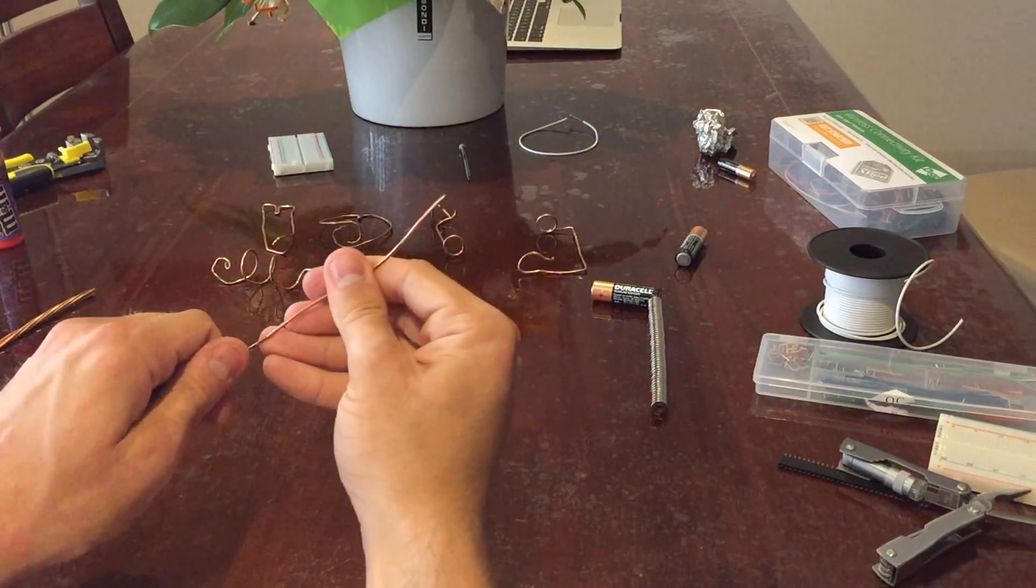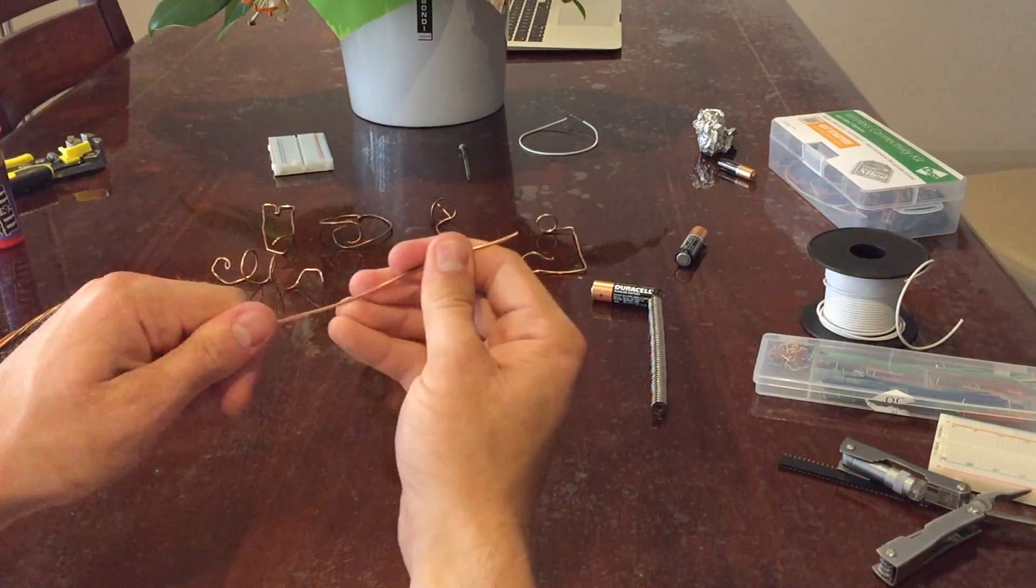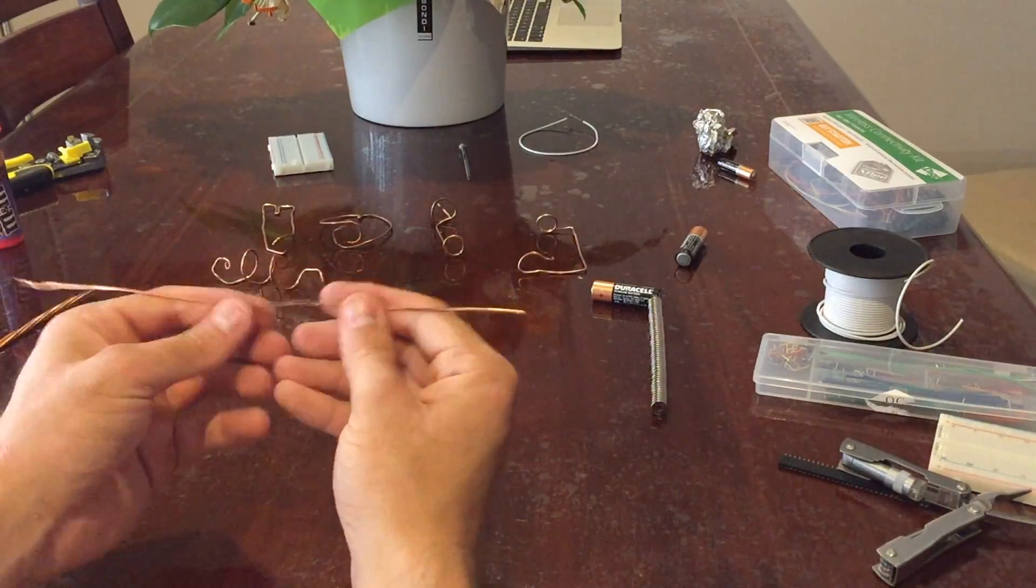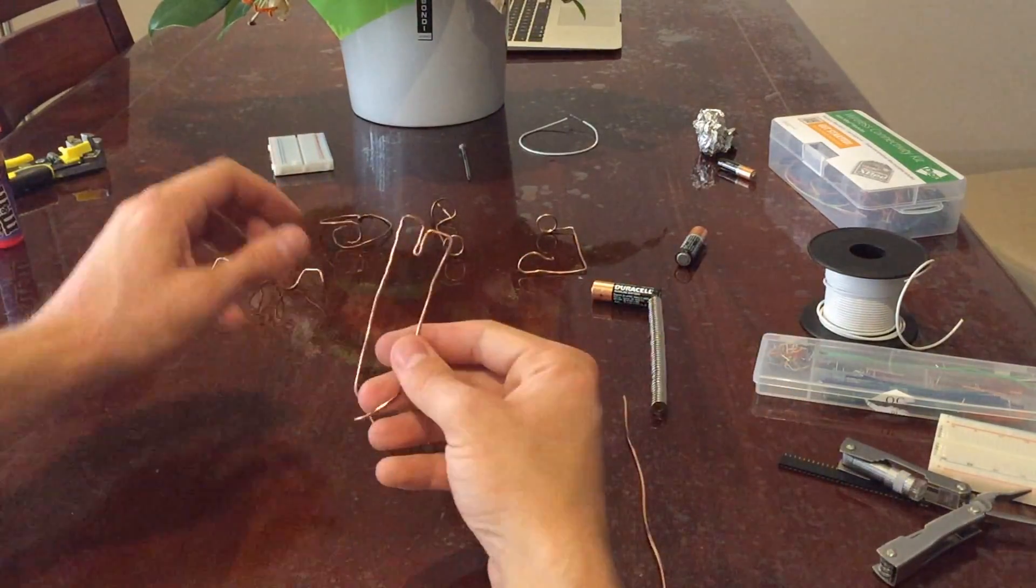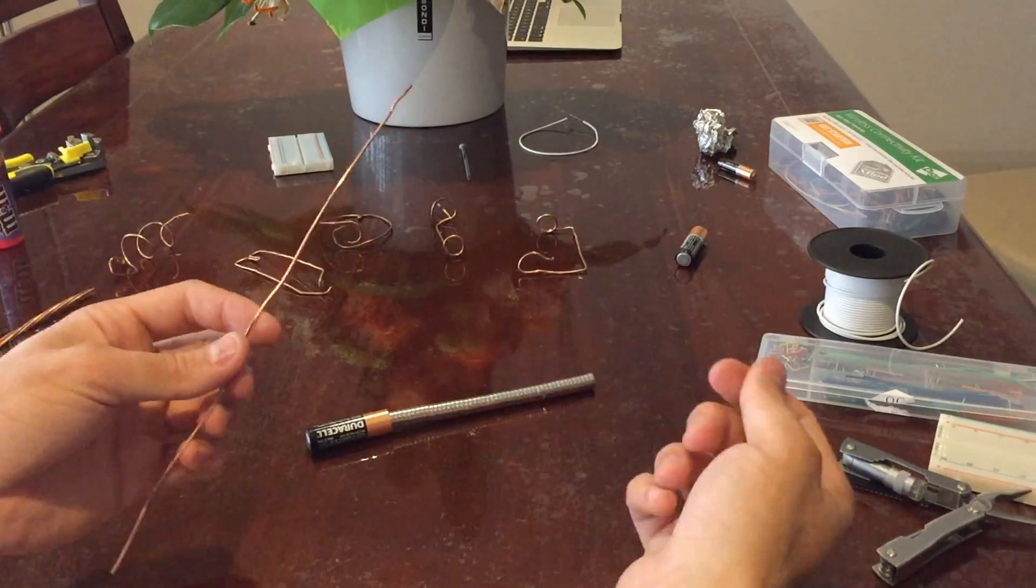I've also got a blog post on how to make a homopolar motor in the description, so if you want to know about where to buy the neodymium magnets, how to source the copper wire, feel free to click on that link and I explain a bit more how homopolar motors work as well and the electromagnetism behind them.